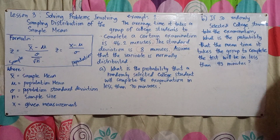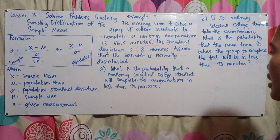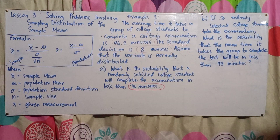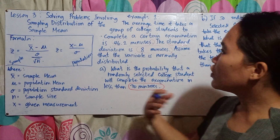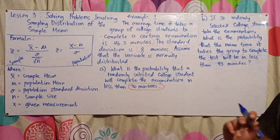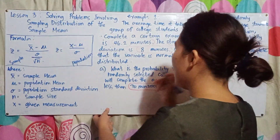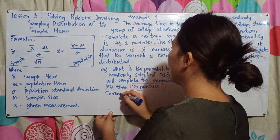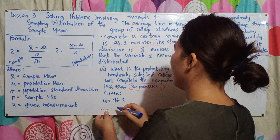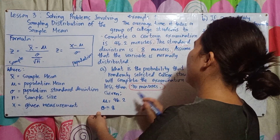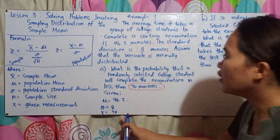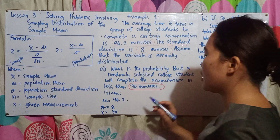Letter A: What is the probability that a randomly selected college student will complete the examination in less than 30 minutes? Since there are only three given data values, the solving process is the same as in previous discussions about probability distribution. So the given values are: population mean is 46.2, standard deviation is 8, and the given measurement is 30. Since only three values are given, we will use the population Z-score formula.